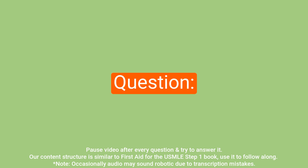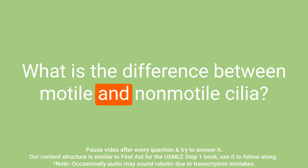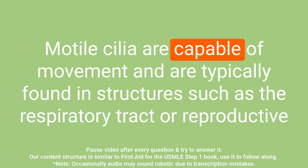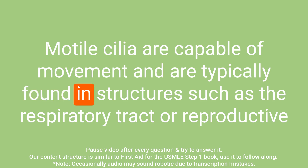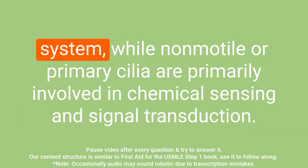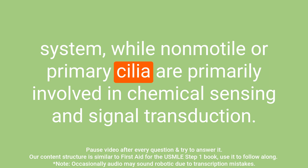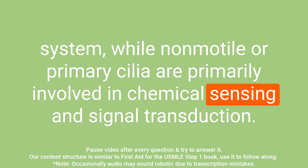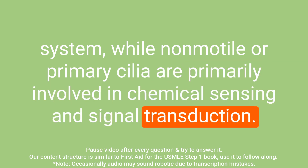Question: What is the difference between motile and non-motile cilia? Answer: Motile cilia are capable of movement and are typically found in structures such as the respiratory tract or reproductive system, while non-motile or primary cilia are primarily involved in chemical sensing and signal transduction.